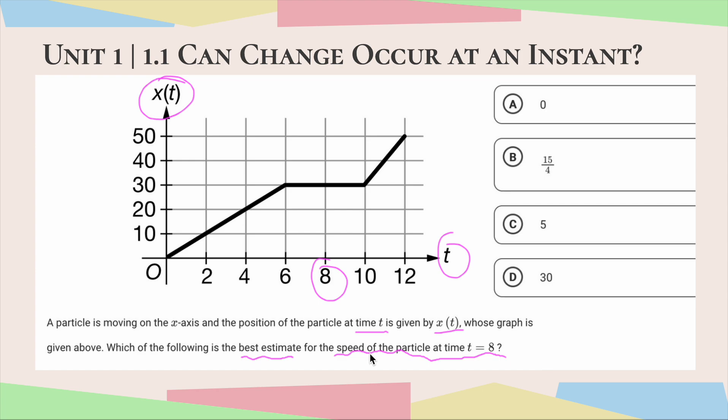So we could, of course, pick two points. Like I could pick this point here and this point here, and I could use my algebra 1 formula, my slope formula, m equals y2 minus y1 over x2 minus x1 to get my rate of change there.